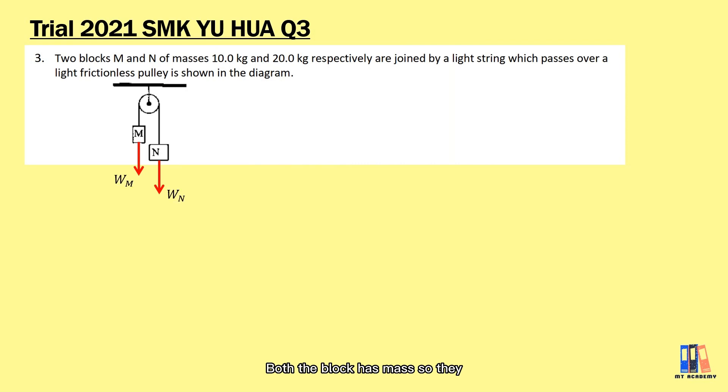Both blocks have mass, so they have gravitational force or weight acting in downward direction. There will also be tension in the string which is trying to pull the mass up. Observe this question: what you can expect is that the heavier block M, which is 20 kg, will pull block m up while moving down.